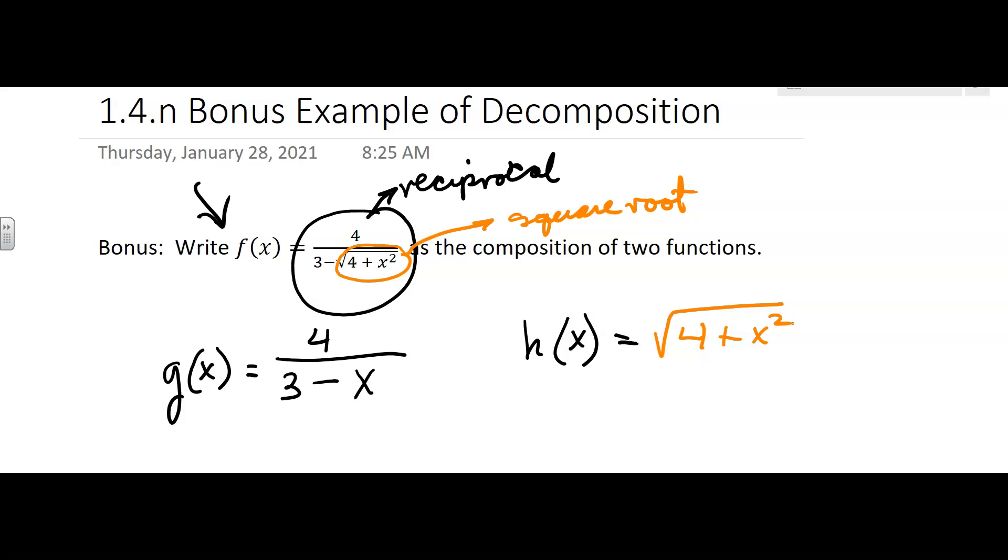You could say, well wait, I don't want to have that. I want to have the square root of x and then another function like k of x be the 4 plus x squared. You can do that, but the directions say to use two functions, so try to make it as simple as you can for yourself.